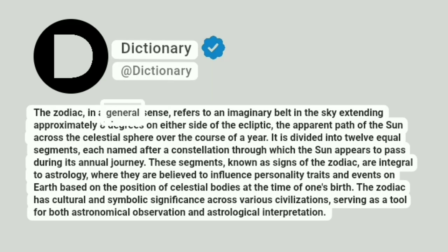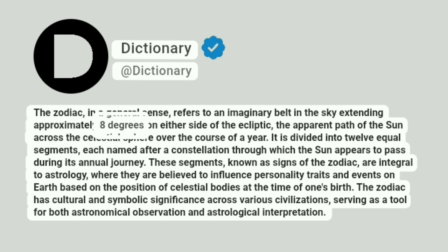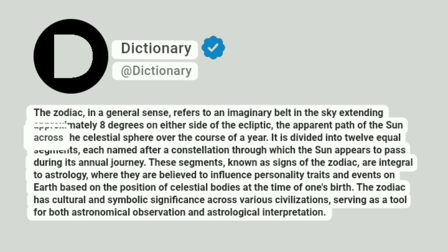The Zodiac, in a general sense, refers to an imaginary belt in the sky extending approximately 8 degrees on either side of the ecliptic, the apparent path of the Sun across the celestial sphere over the course of a year.